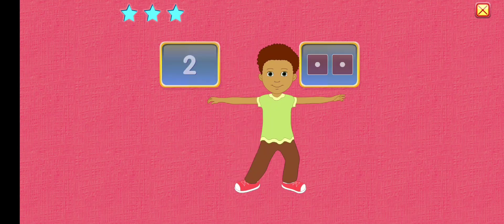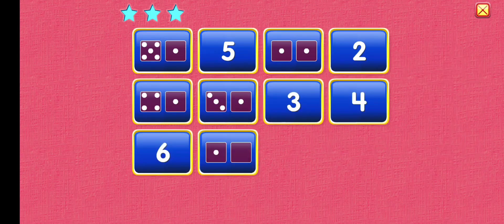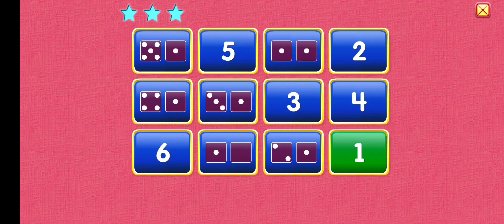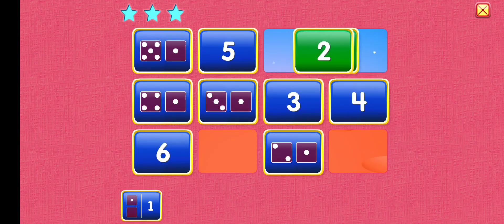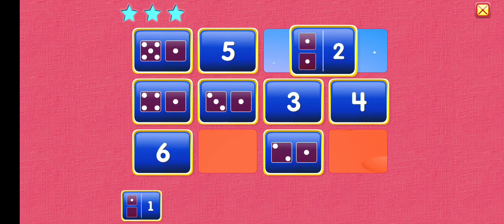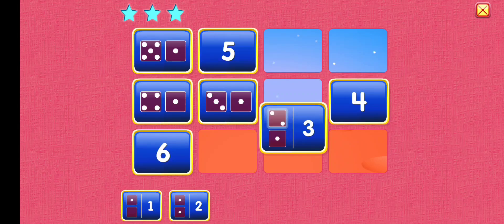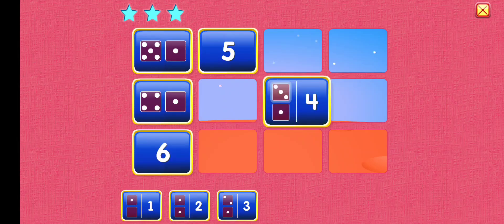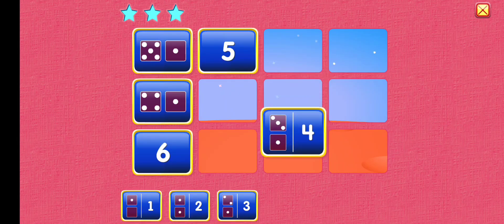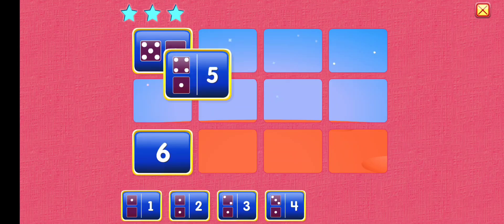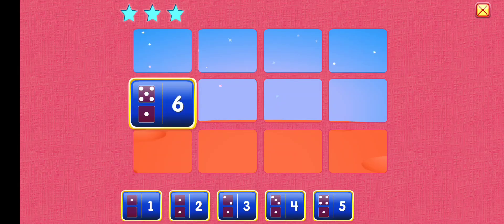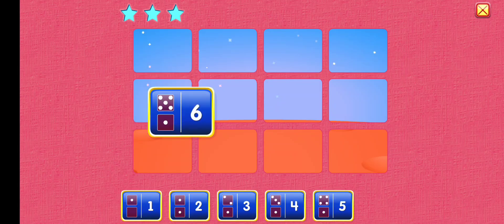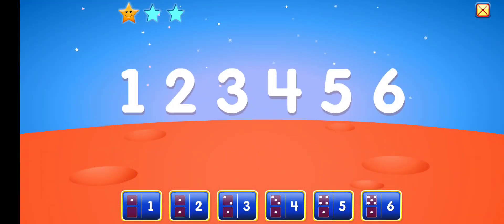Make a match. 1 plus 0 equals 1. 1 plus 1 equals 2. 2 plus 1 equals 3. 3 plus 1 equals 4. 4 plus 1 equals 5. 5 plus 1 equals 6. 1, 2, 3, 4, 5, 6.